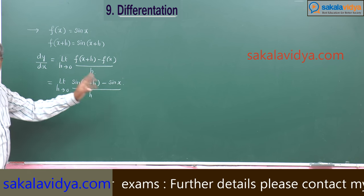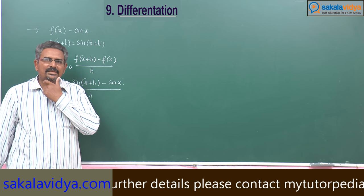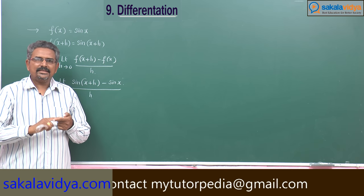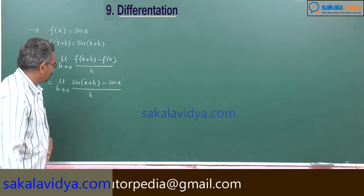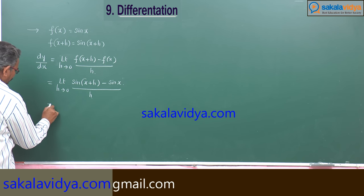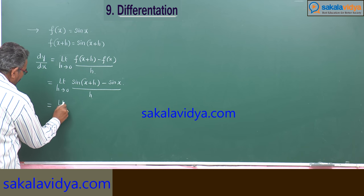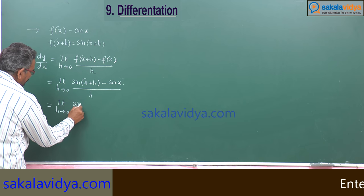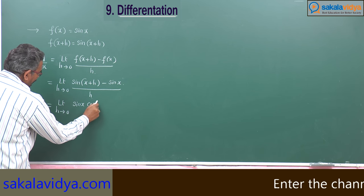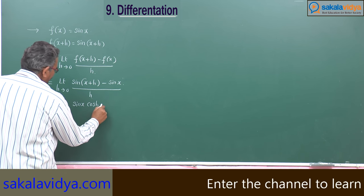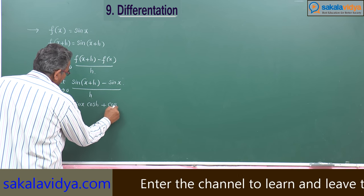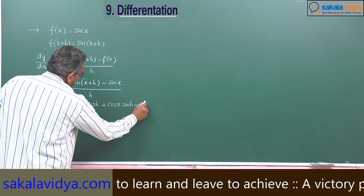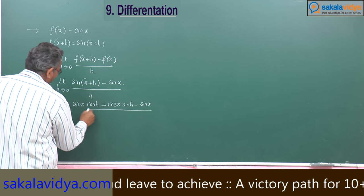This uses the sin(a + b) formula. What is sin(a + b)? It equals sin a cos b plus cos a sin b. So we get: limit h tends to 0 of [sin x cos h plus cos x sin h minus sin x] by h.